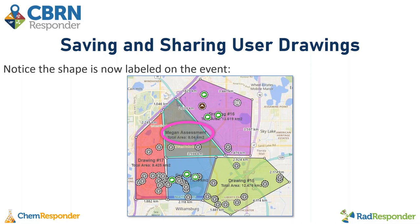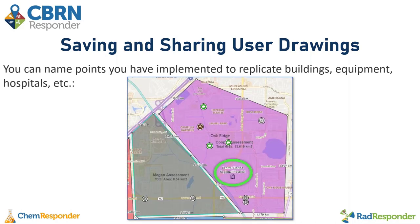The saved shape I've circled is titled Megan Assessment. You can also name points to replicate items such as buildings, equipment, or hospitals. Here I dropped a hospital icon to represent the Central Florida Regional Hospital in the area — those points can be a good reference for people in the event to know where certain important features are.